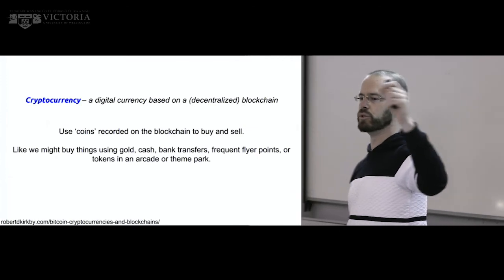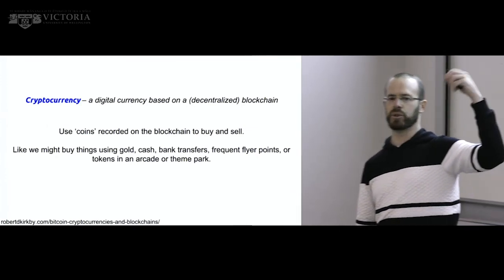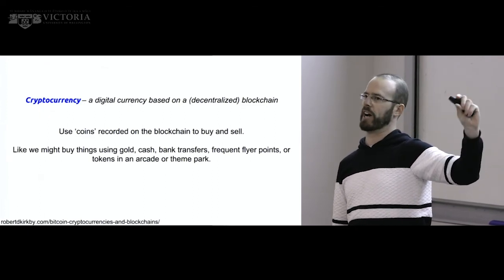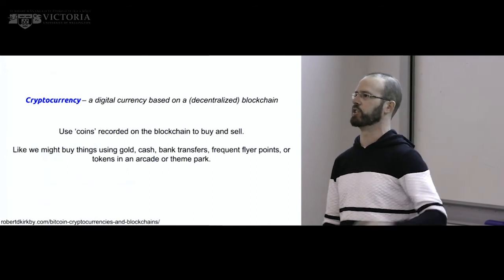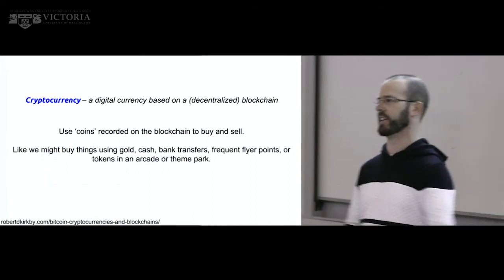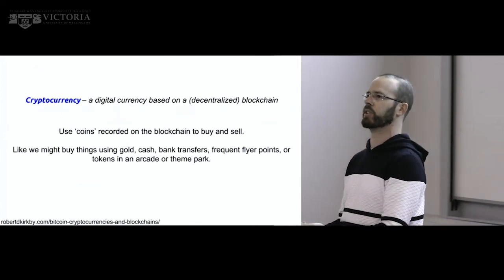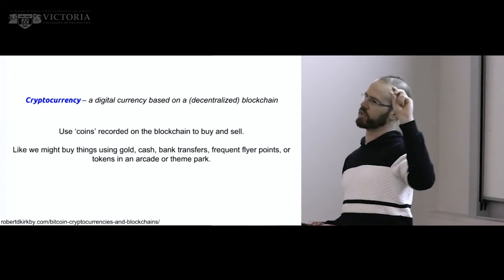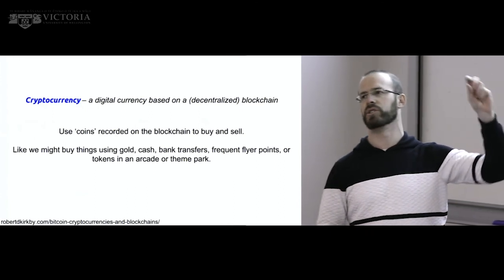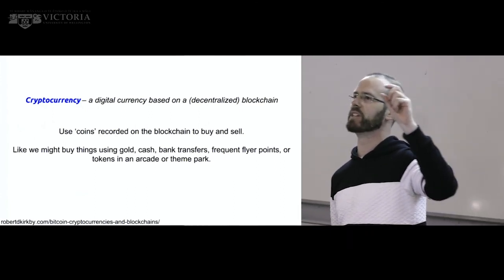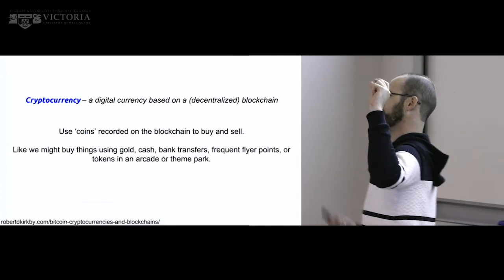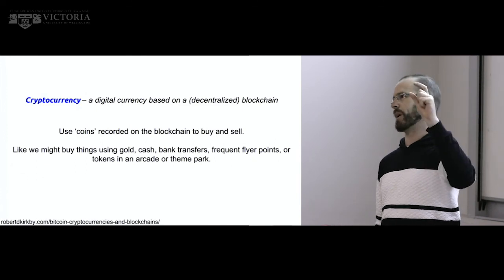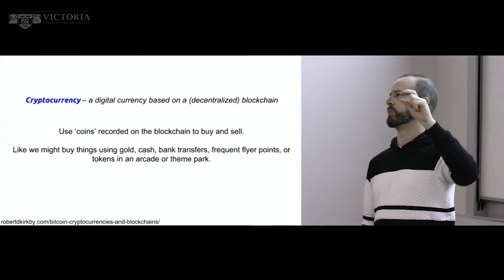You can use these tokens to buy things, just like you might buy things with gold or cash. If you go to a theme park or an arcade, you often get to the front gate, give them some money, and they give you tokens — Mickey Mouse dollars or something like that — and then you spend those as if they were money. You can think of those digital coins or tokens just like that. Just like you can spend Mickey Mouse money with anyone who will accept it, you can spend crypto coins with anyone who will accept them.